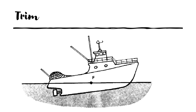Then we have trim. Trim is considered the longitudinal equivalent of list. However, instead of being measured in degrees, it is measured by the difference in draft forward and aft. The trim is the angle at which the vessel sits in the water longitudinally. A vessel will have zero trim if the forward and aft drafts are the same. If the forward draft is more than the aft draft, the vessel is trimmed by head. If the aft draft is more than the forward draft, as seen in the picture, the vessel is trimmed by stern.